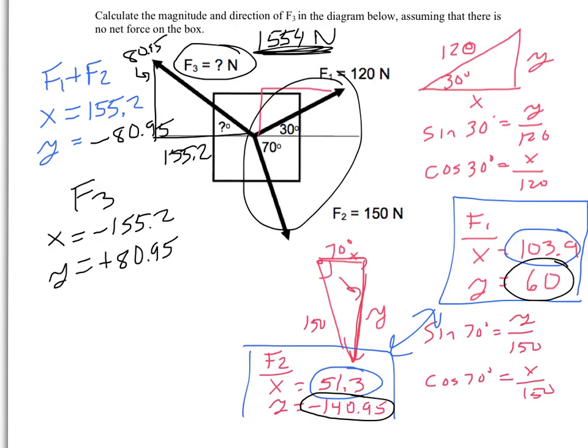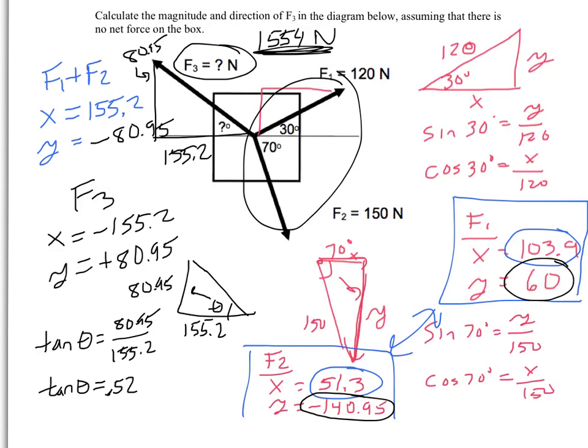Now let's say I want to find this angle. So I have a triangle that I've created. And I know that the y component is 80.95. And the x component is 155.2. And I want to find this angle. So the tangent of this angle equals the opposite, 80.95, over the adjacent, 155.2. So if I divide those, 80.95 divided by 155.2, I have the tan of theta equals 0.52.